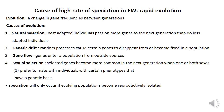Sexual selection: selected genes become more common in the next generation when one or both sexes prefer to mate with individuals with certain phenotypes that have a genetic basis. This results in different types of pairing, different genetic make-up, and different phenotypes — this is called sexual selection.